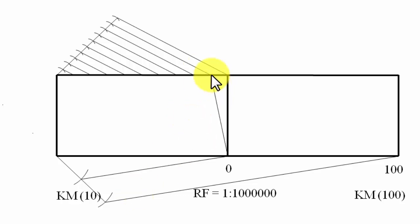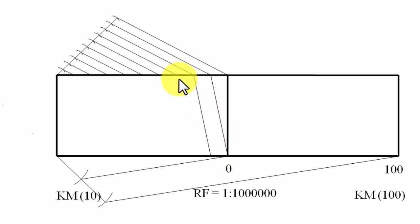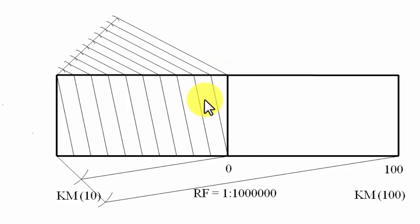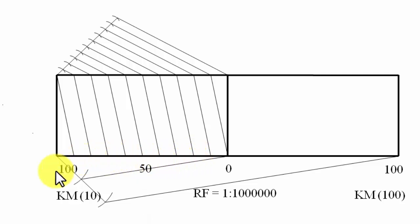Join this first portion to the zero mark. Then keep your drafters along this line, bring it to each successive point and keep drawing lines until all points have been transferred across. This completes the horizontal divisions. So we now have: zero, 10, 20, 30, 40, 50, 60, 70, 80, 90, and 100 kilometers marked.